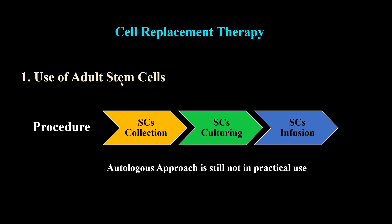Let's discuss the four potential therapeutic approaches. The first is to use adult stem cells to treat diseases. In this approach, scientists first isolate stem cells from the organs of a patient or a donor. Most of our body organs have stem cells. After isolation, the scientists culture the cells to increase their number and then infuse those stem cells into a patient to treat a particular disease.